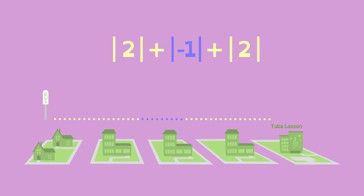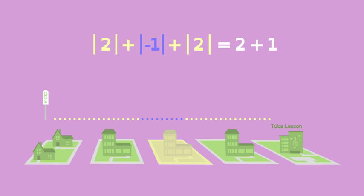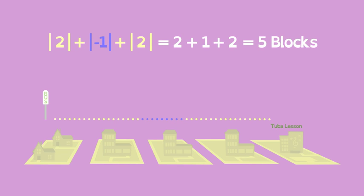Absolute value shows us how much she actually walked: Two blocks forward, plus one block back, plus two blocks forward, for a total of five blocks. Phew!